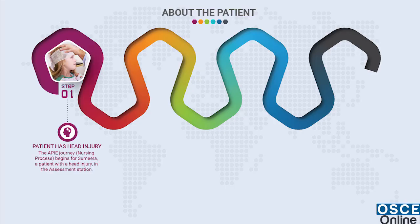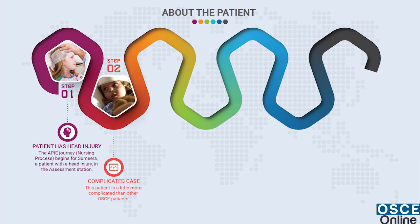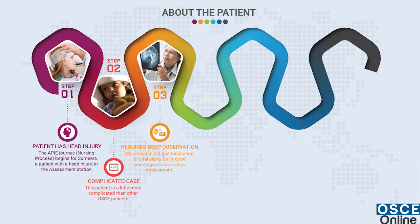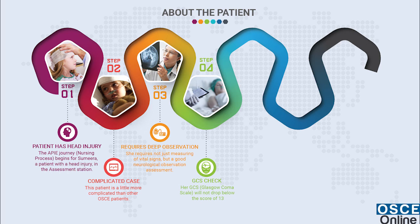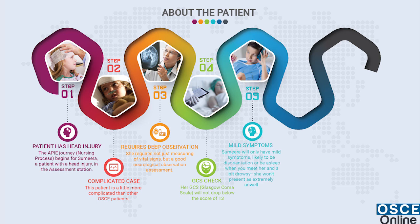The APIE journey nursing process begins for Sumira, a patient with a head injury in the assessment station. This patient is a little more complicated than other OSCE patients. She requires not just measuring of vital signs but a good neurological observation assessment. Her GCS Glasgow Coma Scale will not drop below a score of 13. Sumira will only have mild symptoms, likely to be disorientation or be drowsy when you meet her. She won't present as extremely unwell.